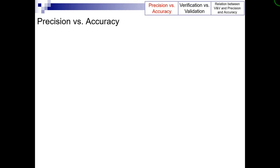Precision and accuracy are two ways that we can use to think about error. Accuracy refers to how close a measurement is to the true or accepted value. Precision refers to how close the measurements of the same item are to each other. Precision is independent of accuracy, meaning it is possible to be very precise but not very accurate.